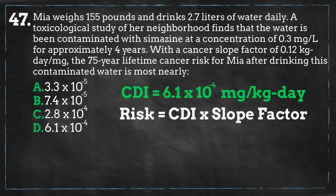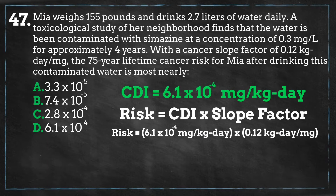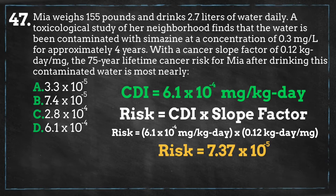As a rule of thumb, any risk that exceeds one in one million citizens is considered unacceptable. Multiplying our daily intake rate by our slope factor, we get 7.37 times 10 to the minus 5, which is closest to answer B. If you multiply this answer by 1 million citizens, this corresponds to approximately 74 citizens that will be at risk for getting cancer in addition to any cancer risk borne by a person not exposed to this contaminant. This exposure should be addressed immediately so Mia and others in her community are not adversely affected.